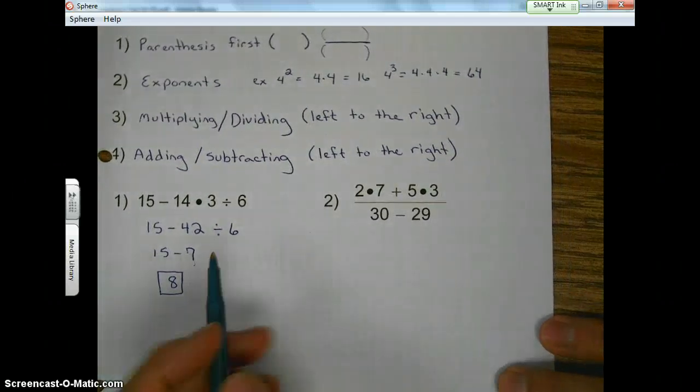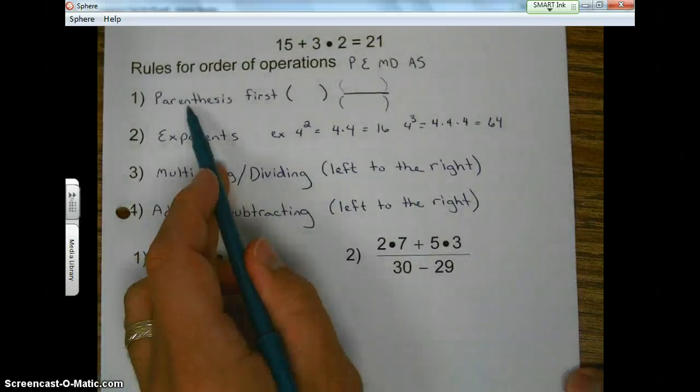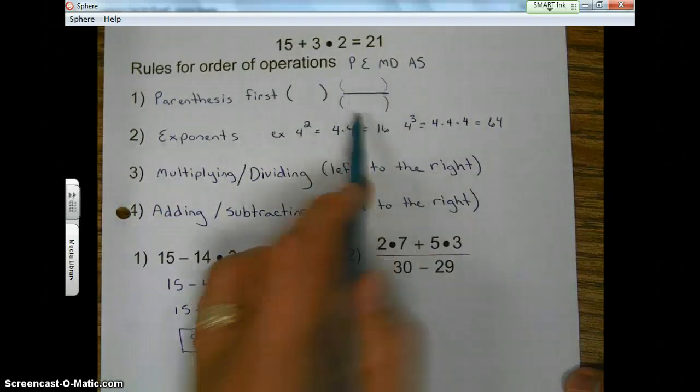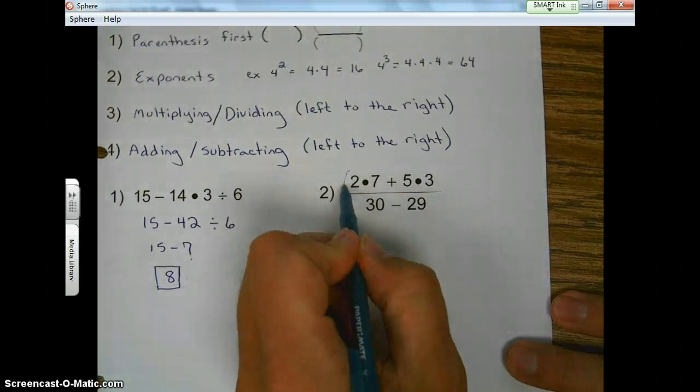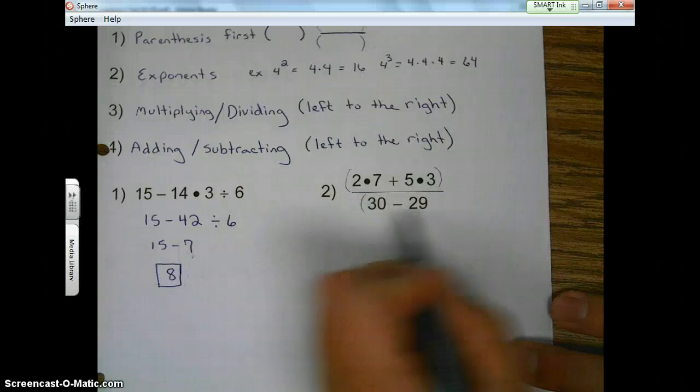So number two, we don't see any parentheses, but if you'll remember up here that if you have a fraction, there's an invisible parentheses on the top and the bottom. So there's an invisible parentheses on the top and on the bottom. They're assumed to be there.